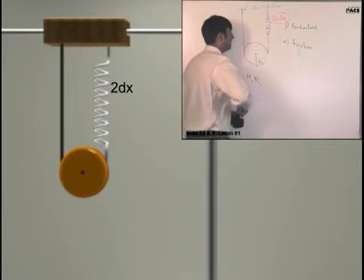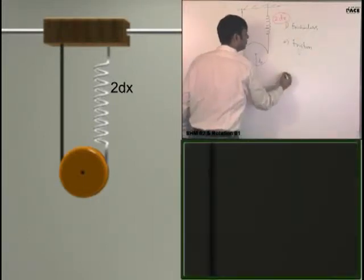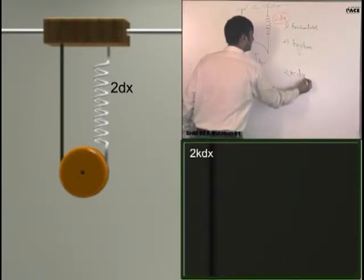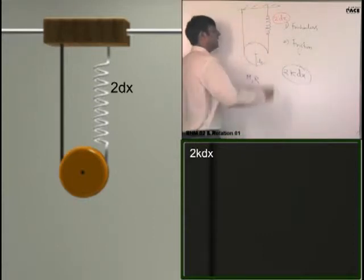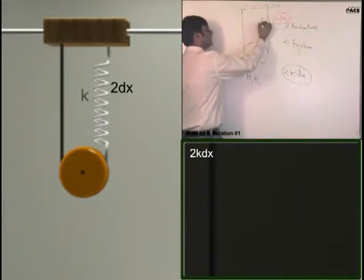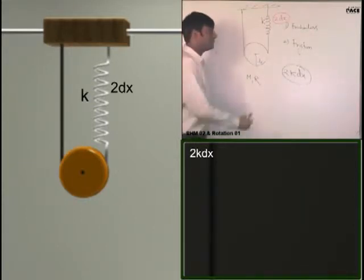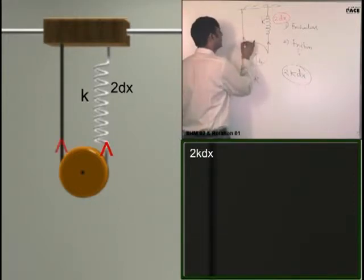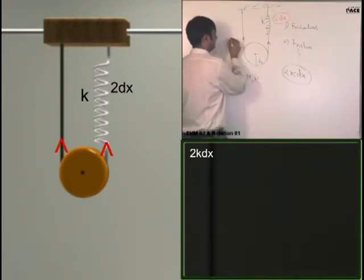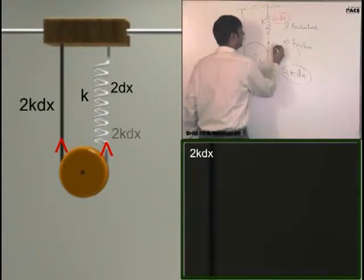2k dx. The force is 2k dx. K into 2 which is the force. Now this force is same on both sides or not if it is frictionless. Yes. So 2k dx and 2k dx.